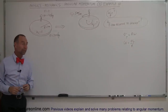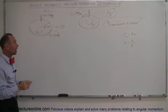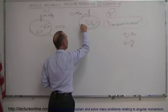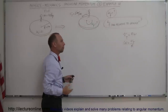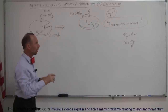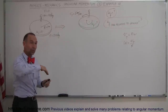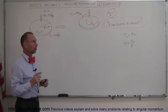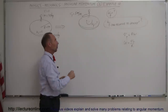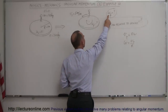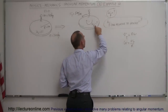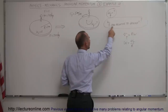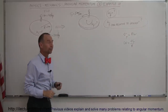The merry-go-round is also not moving. The child begins to walk along the edge, and as we probably all have experienced, the merry-go-round will begin to rotate in the opposite direction. The question is: what will be the final angular velocity of the merry-go-round, and what will be the angular velocity of the child relative to the ground?